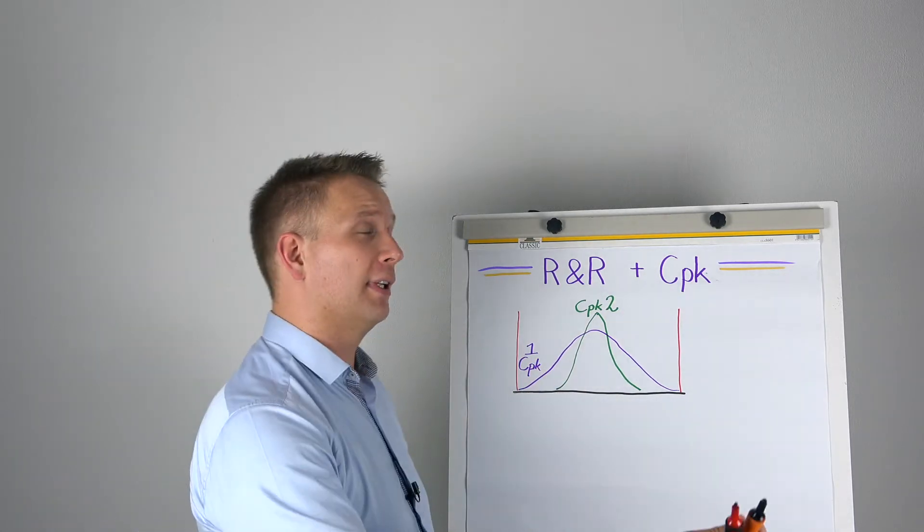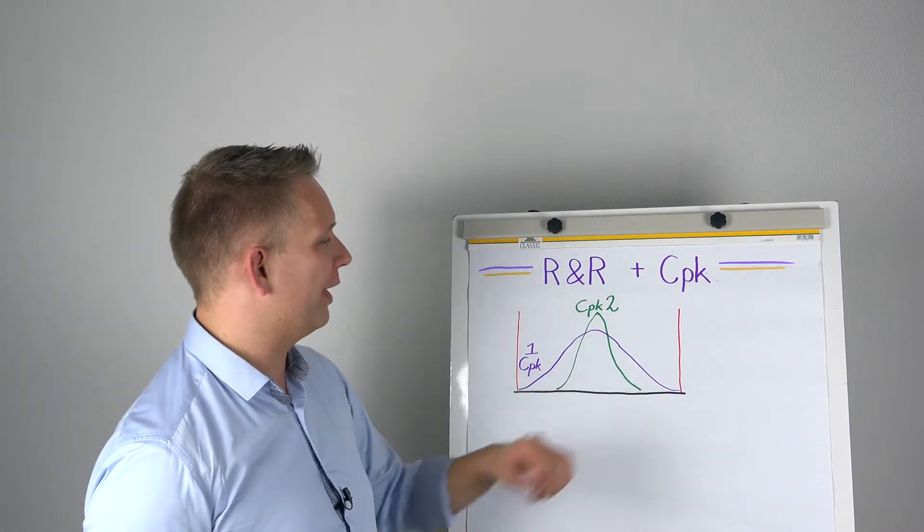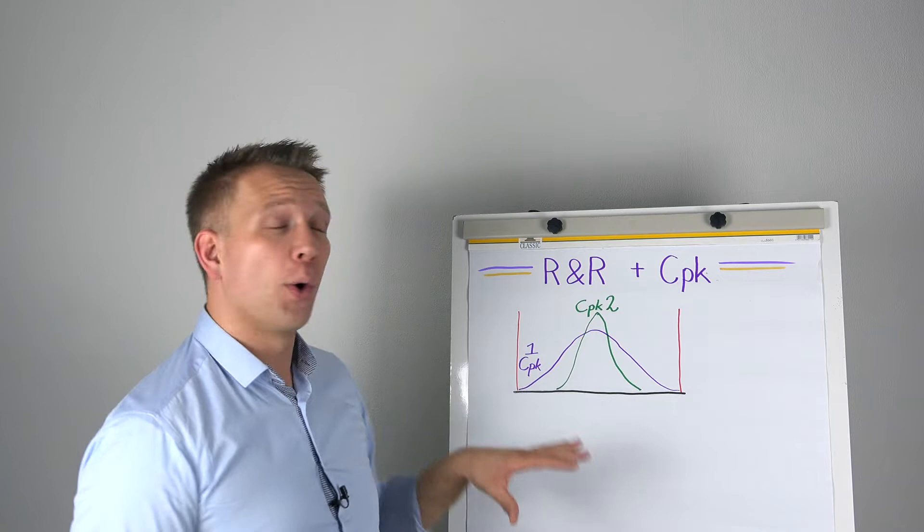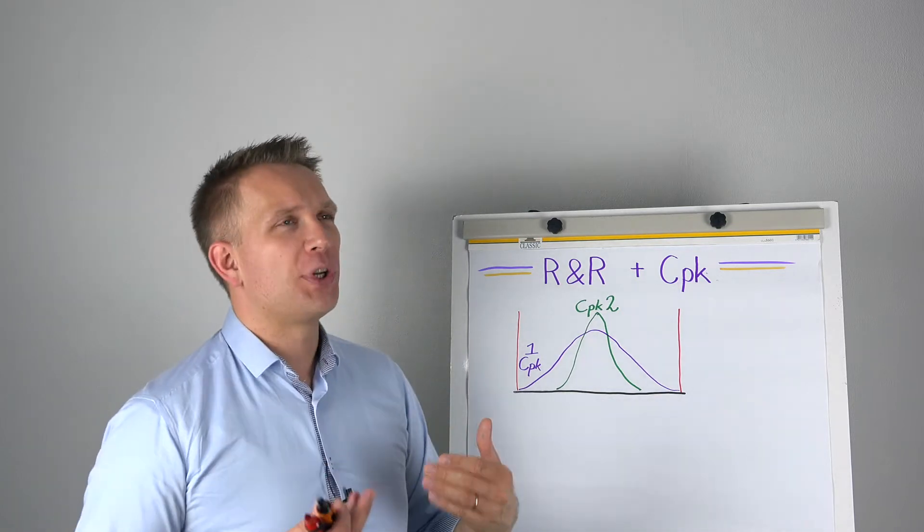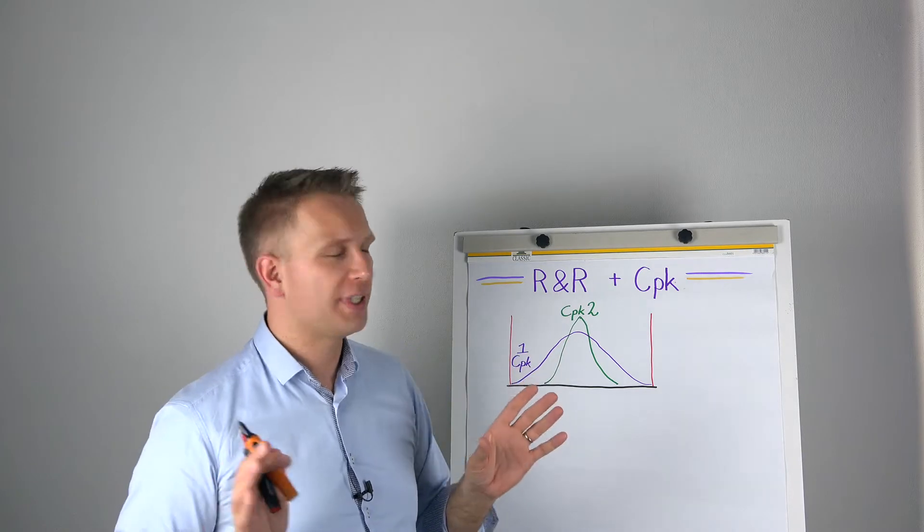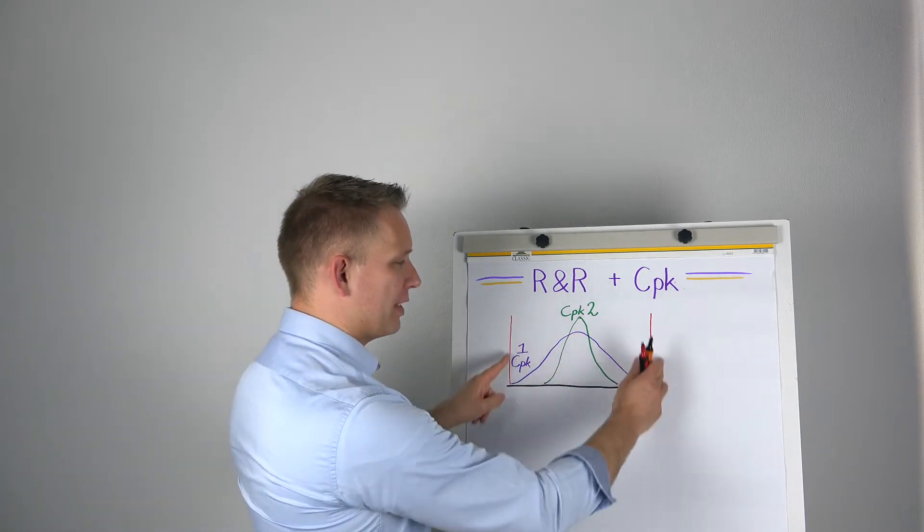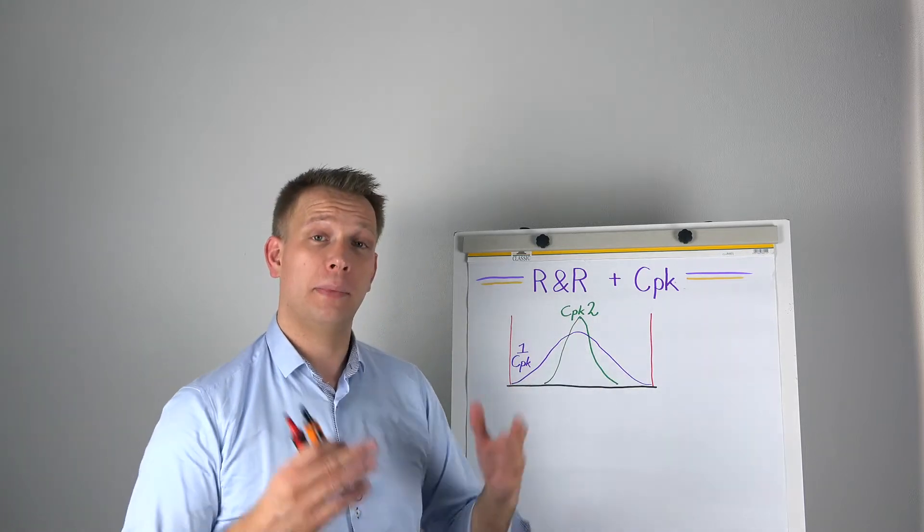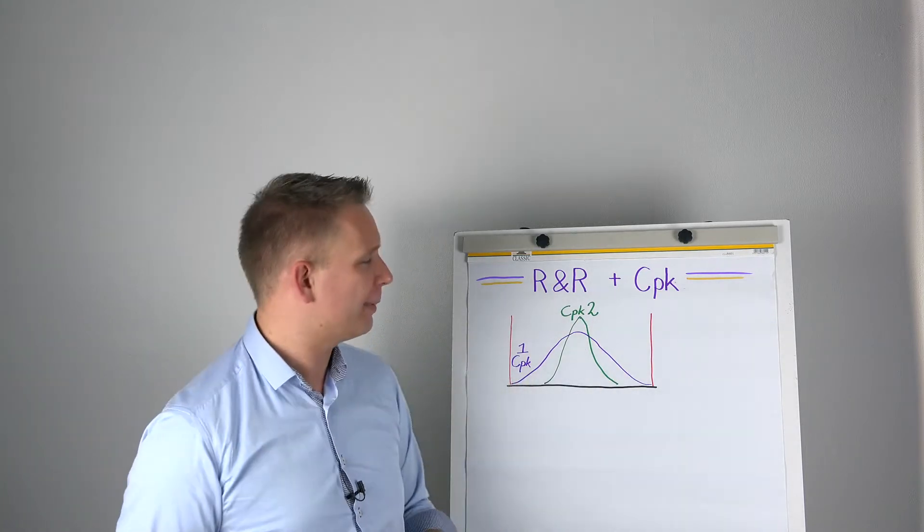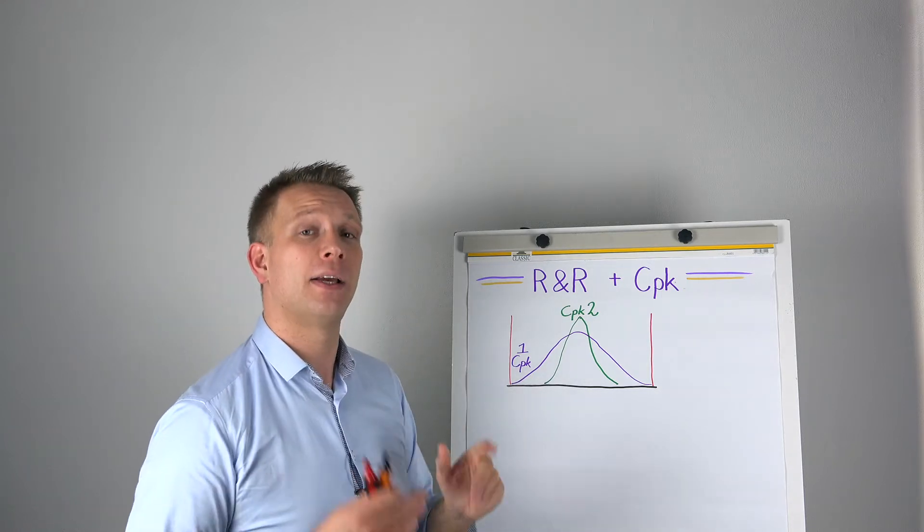Generally, when I draw one of these normal distributions, I only draw it out to three standard deviations, even though, of course, it will continue indefinitely. But generally, I draw only three standard deviations. And what you then get is that we sort of say the whole process, as if three standard deviations in both directions would be the whole process. But it fits exactly within my specification limits, my tolerance limits. So that has a process capability of one.